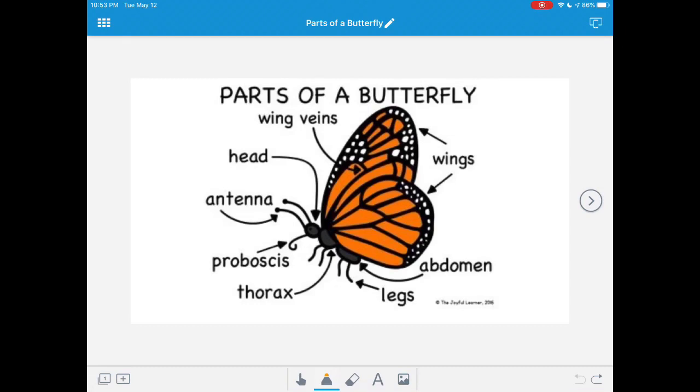Coming off of the thorax are the legs. Butterflies are insects, which means they have six legs total.